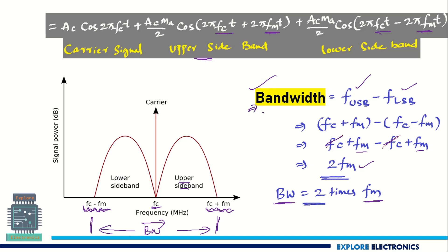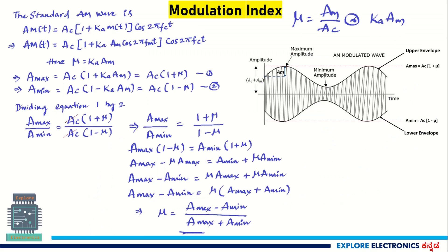Now, let us look at the modulation index in terms of the maximum and minimum amplitudes. The standard AM wave is represented as AC into (1 plus KA into M(t)) into cos(2π FC t). If you replace M(t) with the equation AM cos(2π FM t), then KA into AM is the modulation index. We can also write the modulation index as KA into AM.